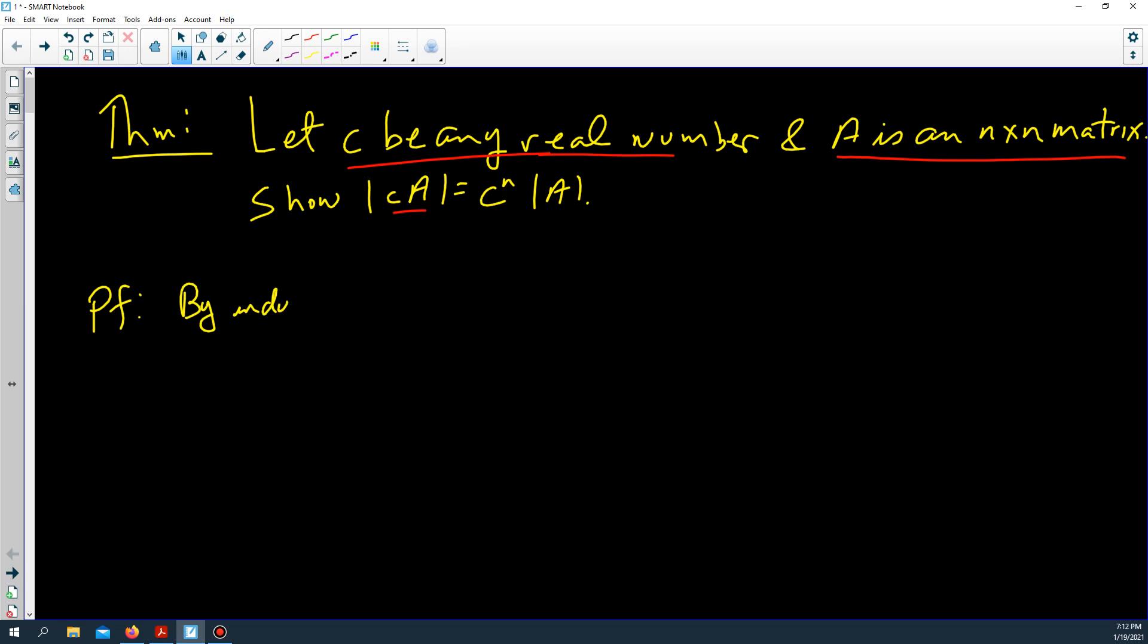Believe it or not, this is by induction. How about we say let k equal the number of rows of A we multiply by c. We're multiplying all n rows by c, so if k is equal to one, then let A sub one denote the matrix...